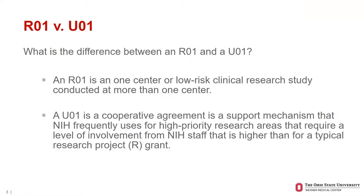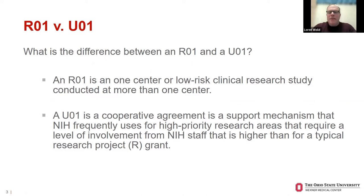An R01 can be a basic or clinical project — focused on one center, one or two labs, with very limited or no involvement from the program officer. Whereas the U01 is larger, usually multi-site, and there's a lot of involvement from NIH staff who have a specific reason for funding this project and a specific involvement in the execution of the project.